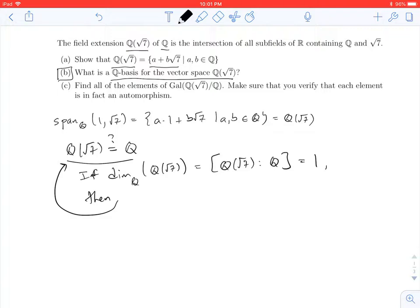But it doesn't. The square root of 7 is not an element of Q. It's not a rational number. So we know that the dimension cannot be 1. That means it must be 2.